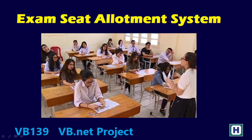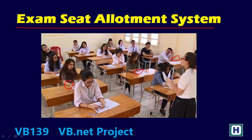Hello, welcome to this video tutorial. I'll explain the project Exam Seat Allotment System. We need to write a program to allocate a seat for each student to write the examination. The rule is that each student must come from a particular semester or course, and the next student should come from a different semester or different course — they should not be from the same semester or same course.